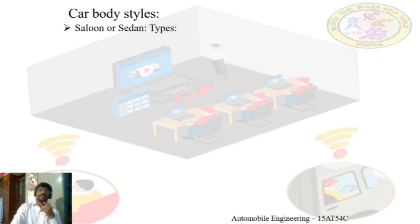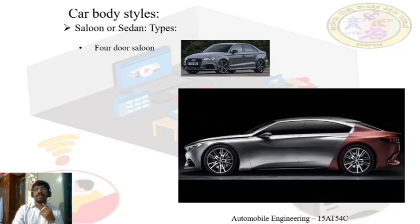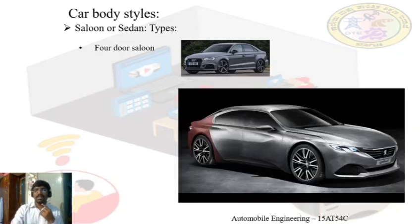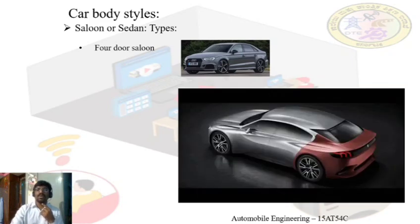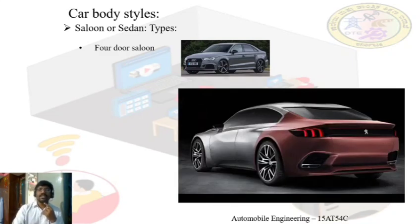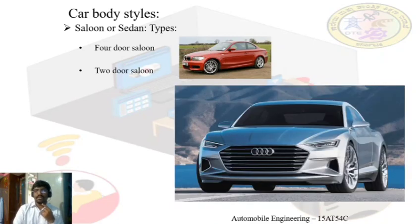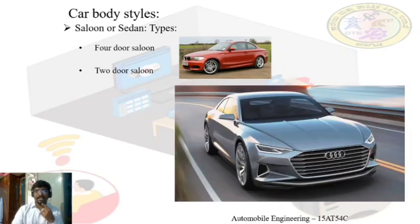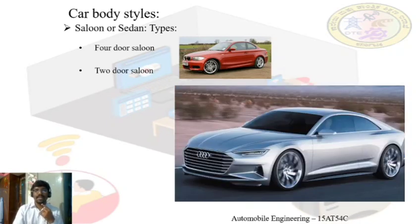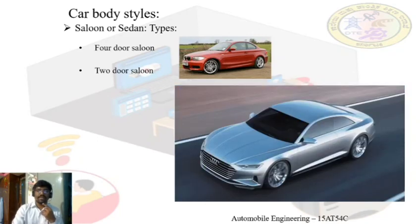Looking at the different types of sedan or saloon car, there are different types. The first type is the four-door saloon — as the name indicates, there will be four doors, two on either side, two doors for each row of seats, making it very easy for the driver and passengers to get in or out. The next one is the two-door saloon, where there will be only two seats and two doors provided. The remaining features are the same.